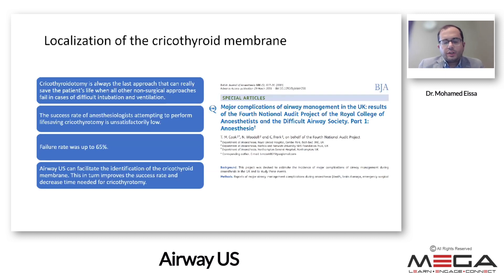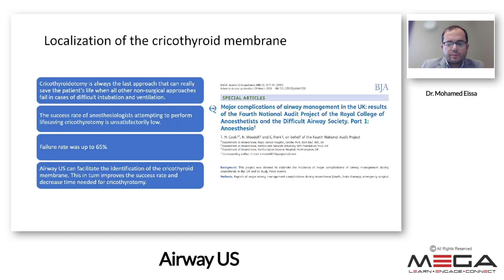For management of a difficult airway, cricothyroidotomy is usually the last approach to save a patient's life when all other non-surgical approaches fail. However, the success rate of life-saving cricothyroidotomy by anesthesiologists is low, with a failure rate stretching up to 65%, as shown by the 4th National Audit Project of the Royal College of Anaesthetists. This is usually due to failure to identify the cricothyroid membrane by external visualization and palpation. Airway ultrasound can facilitate identification of the cricothyroid membrane, improving success rates and decreasing time needed.